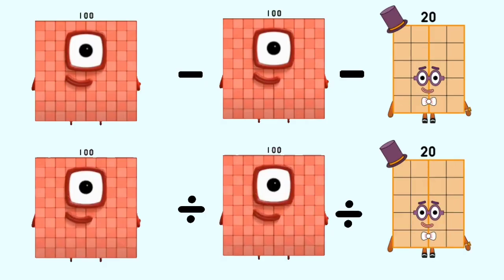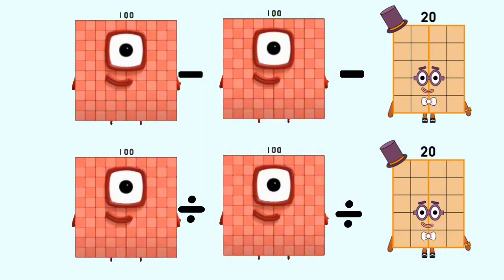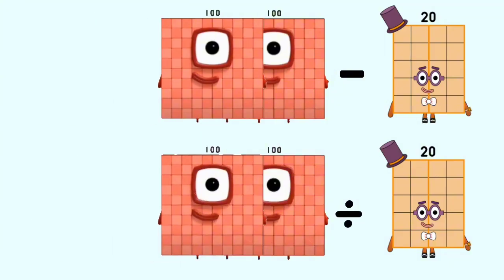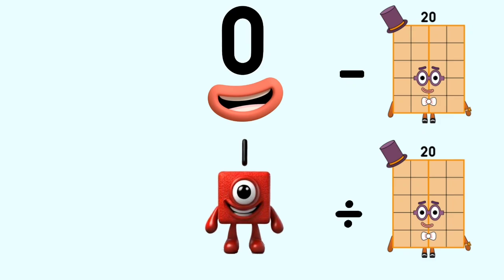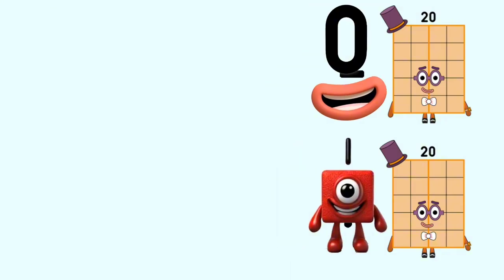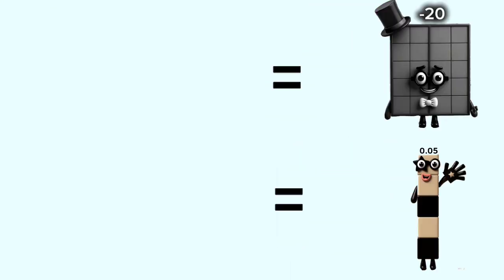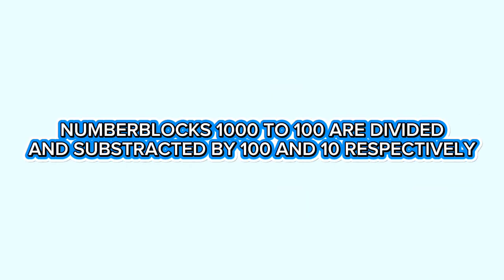Number blocks 100 minus 10 and divided by 100 equal 0 and 1. Number blocks 0 minus 20 and 1 divided by 20 equal negative 20 and 0.05. Number blocks 1000 to 100 are divided and subtracted by 110 respectively.